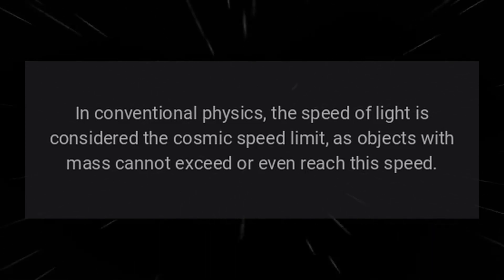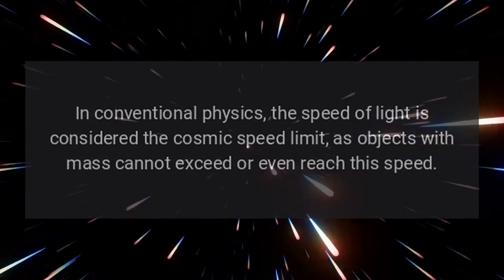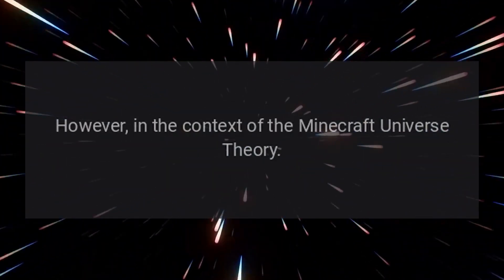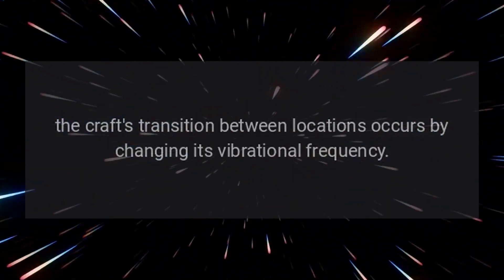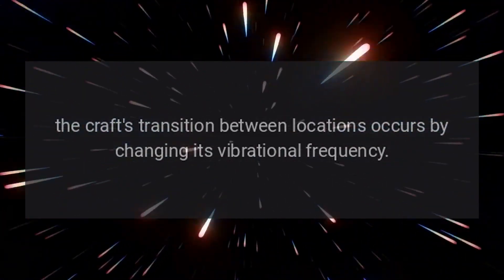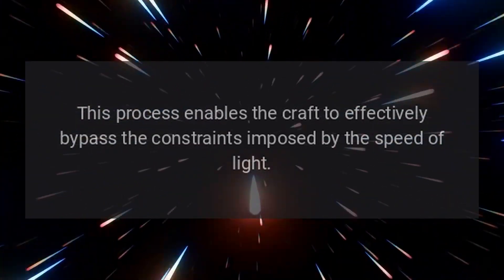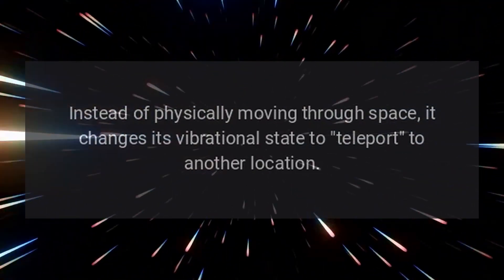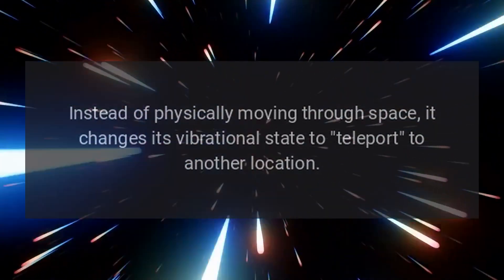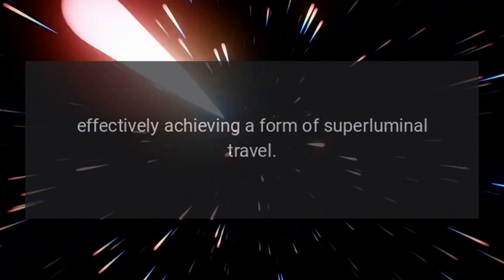In conventional physics, the speed of light is considered the cosmic speed limit, as objects with mass cannot exceed or even reach this speed. However, in the context of the Minecraft Universe Theory, the craft's transition between locations occurs by changing its vibrational frequency, enabling it to bypass the constraints imposed by the speed of light. Instead of physically moving through space, it changes its vibrational state to teleport to another location, effectively achieving a form of superluminal travel.